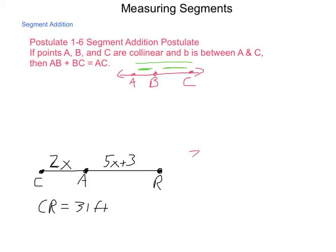So I have 2x, or more specifically, let's take it general, CA plus AR has to equal CR. CA, we're told, is 2x. AR is 5x plus 3. And we're going to be adding these together to give us the total length of 31 feet. Now, solve for x. Combining like terms, we come out with 7x plus 3 equals 31.